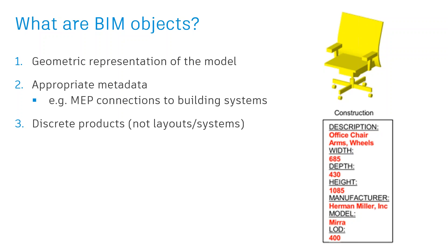So let's talk about what BIM objects are. BIM objects, Revit families, or components — they're the same thing. They're similar to AutoCAD blocks if you've heard of those, but there is one important distinction: the objects are 3D models and they have information attached to them.